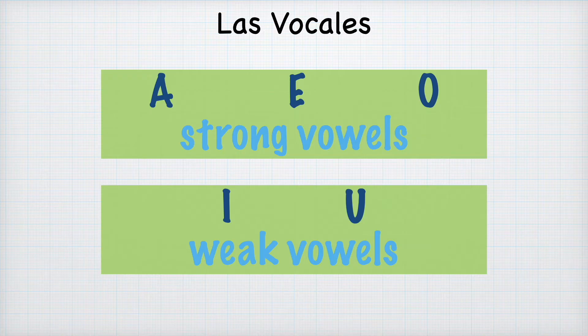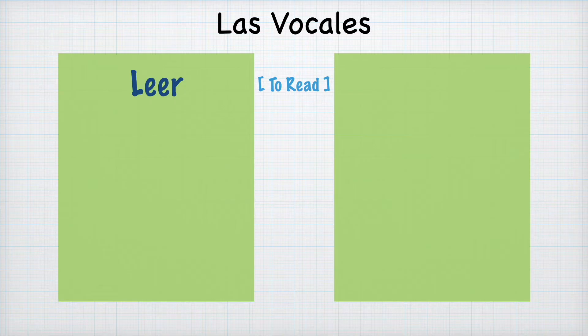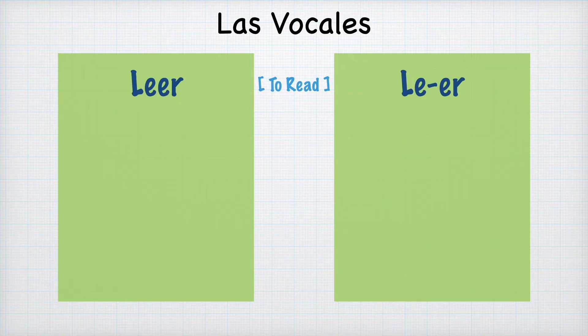For example, two strong vowels together make two different syllables. Leer has two letter E's, and because E is a strong vowel, this word has two syllables: le-er.